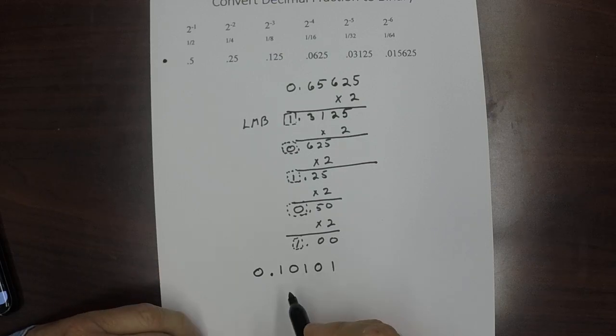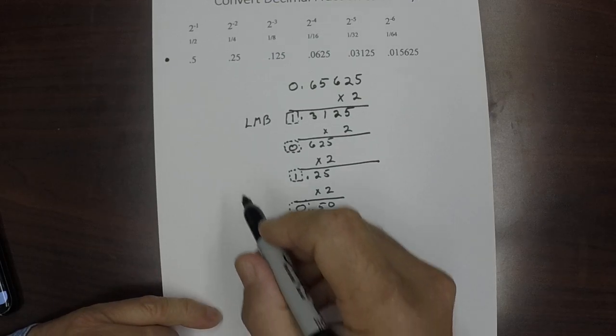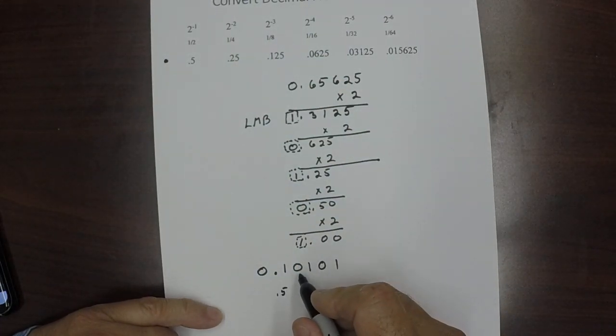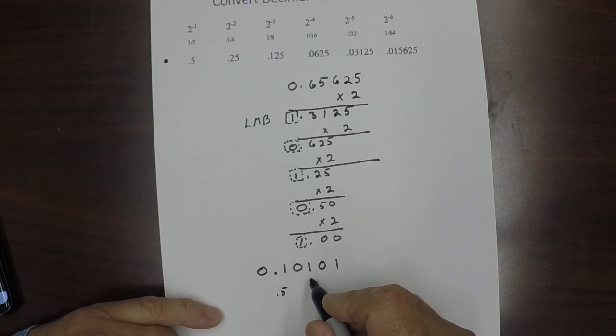Let's check that. This position right here we know is worth 0.5. This one's worth 0.25 but there's not a 1 in it. This is worth 0.125.